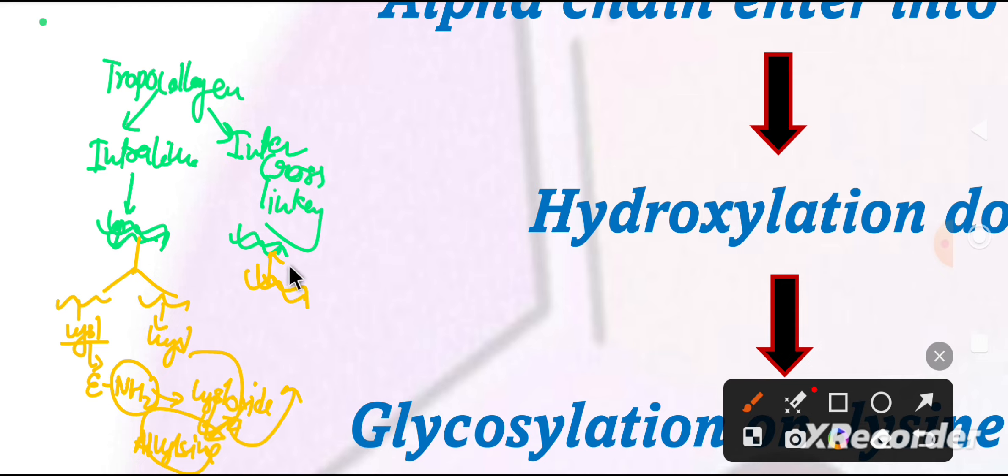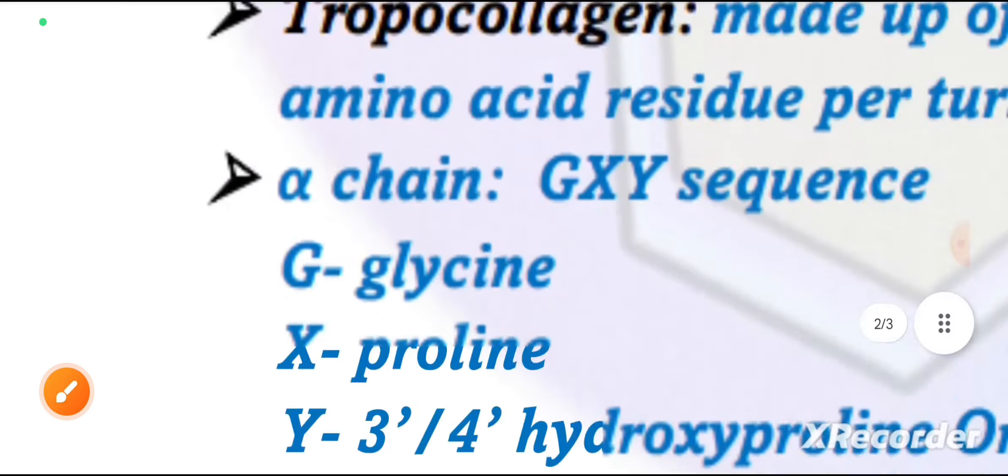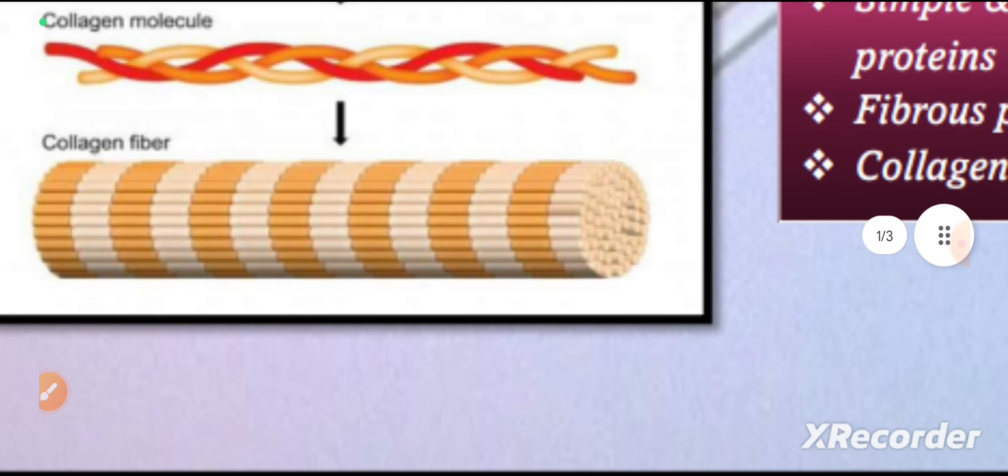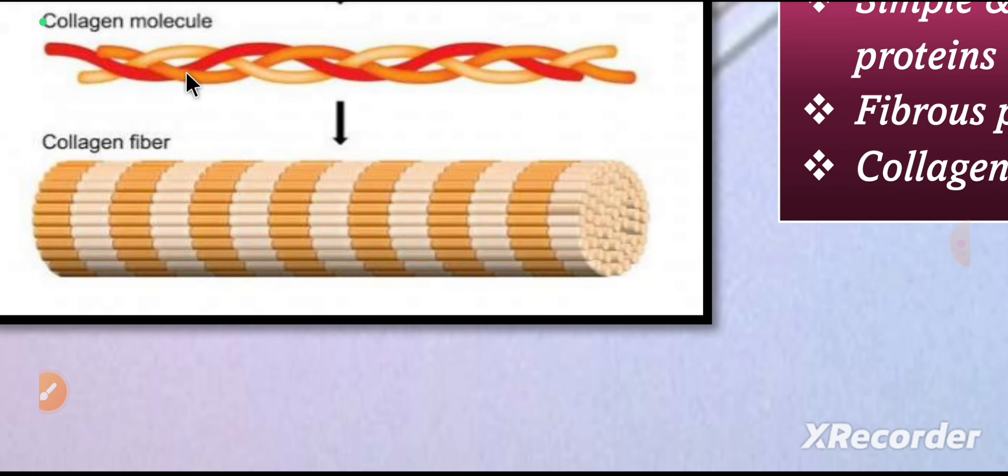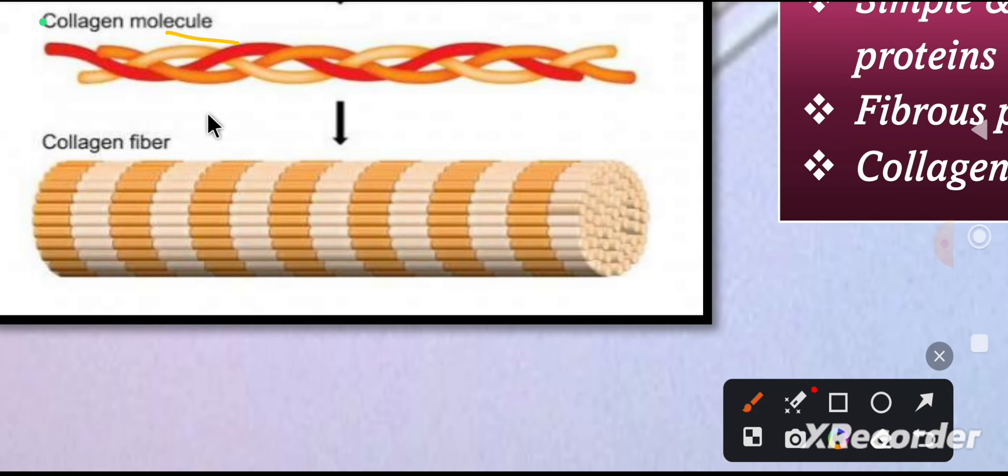Collagen fibrils help to form collagen fiber. Aldol condensation is called inter-cross-linking. This structure is called collagen fiber, which is made by tropocollagen molecules.